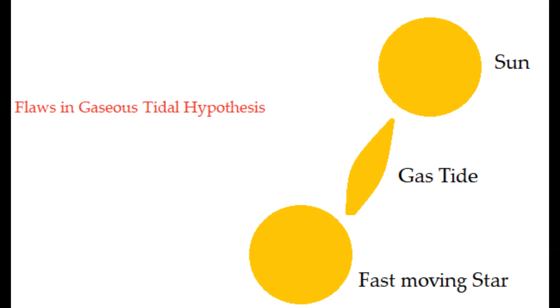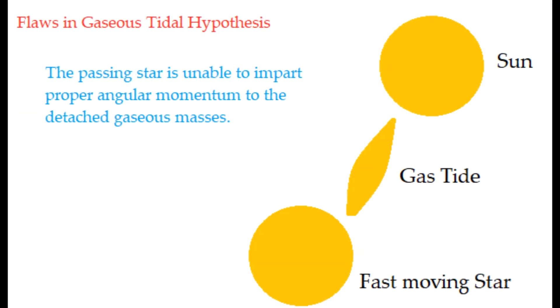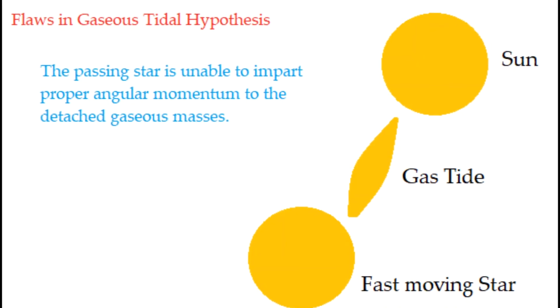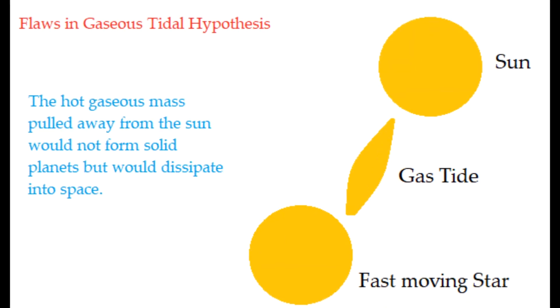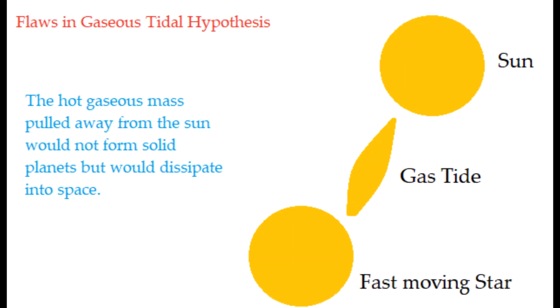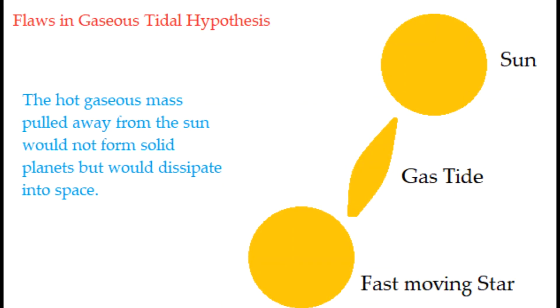Flaws in the gaseous tidal hypothesis. The passing star is unable to impart proper angular momentum to the detached gaseous masses. The hot gaseous mass pulled away from the Sun would not form solid planets but would dissipate into space.